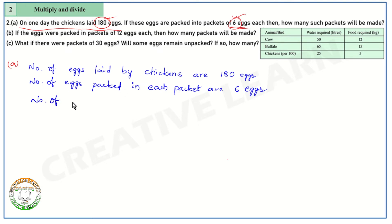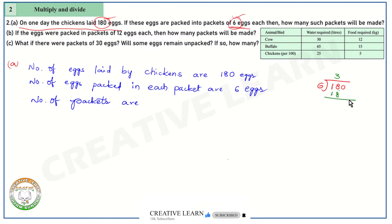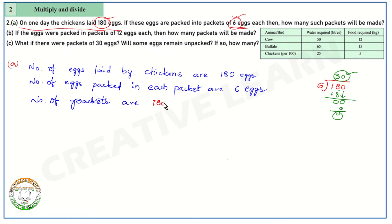Now, number of packets — let's find out. Do the division: total 180 eggs, each packet consists of 6 eggs. In the 6 times table: 6 into 1 doesn't go, so take 18. How many times? 3 times — 6 threes are 18. Bring down the 0; 6 zeros are 0, so write 0. That makes 30 packets.